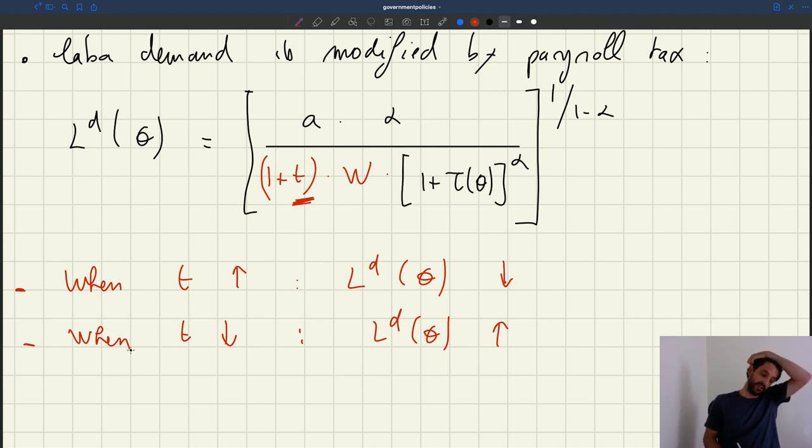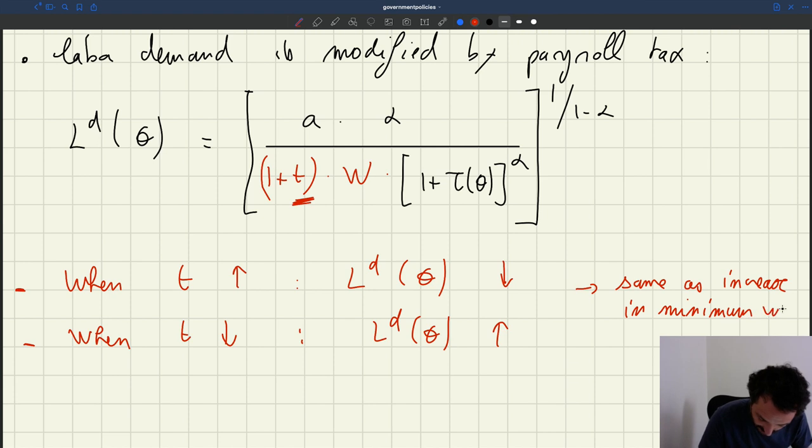And so you can see that an increase in the payroll tax is just the same, it's going to depress the labor demand, so it's just the same as an increase in minimum wage. It's going to look exactly the same. And when you reduce the payroll tax, it's just exactly the same as a decrease in minimum wage. So they'll operate exactly the same way. So everything we've seen with a minimum wage actually translates to the analysis of a payroll tax.